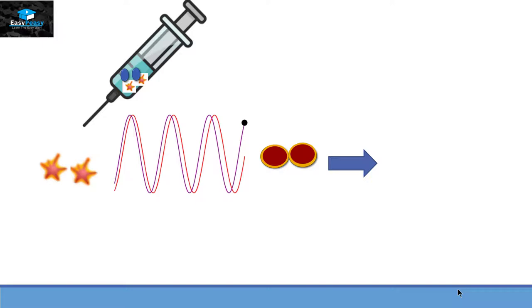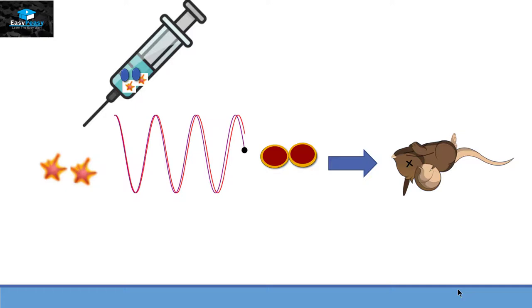That's why the mouse died when it was injected with both colonies. This principle is called the transforming principle of bacteria.